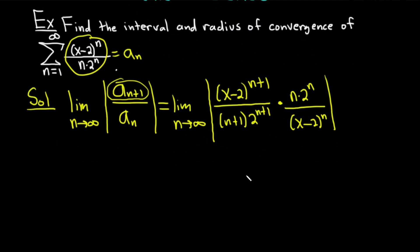Let's keep going. This equals the limit as n goes to infinity. We have the absolute value of x minus 2 to the n plus 1 over x minus 2 to the n. The x minus 2 to the n cancels and we're left with x minus 2. Then 2 to the n over 2 to the n plus 1. The 2 to the n cancels and we're left with n over n plus 1 times 2. Basically, the 2 to the n and x minus 2 to the n canceled.